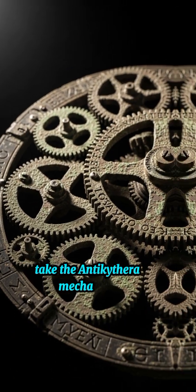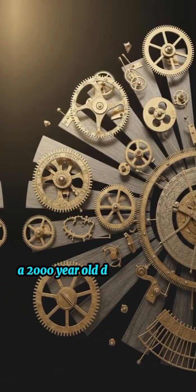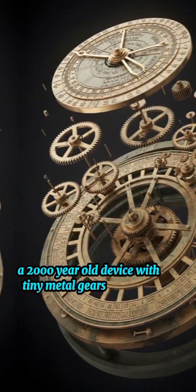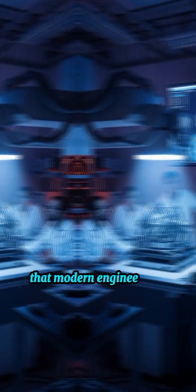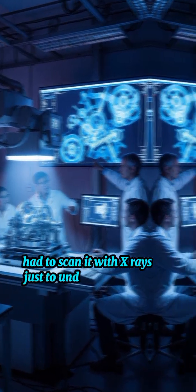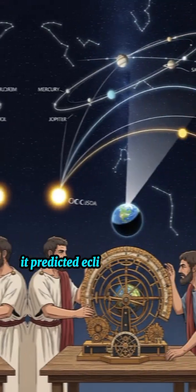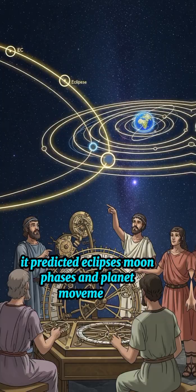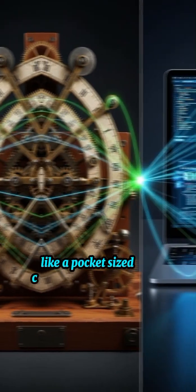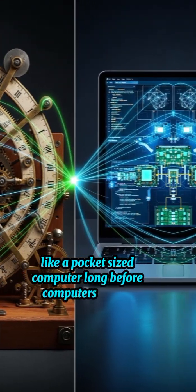Take the Antikythera mechanism. A 2,000-year-old device with tiny metal gears, so perfect that modern engineers had to scan it with X-rays just to understand it. And what did it do? It predicted eclipses, moon phases, and planet movements, like a pocket-sized computer long before computers existed.